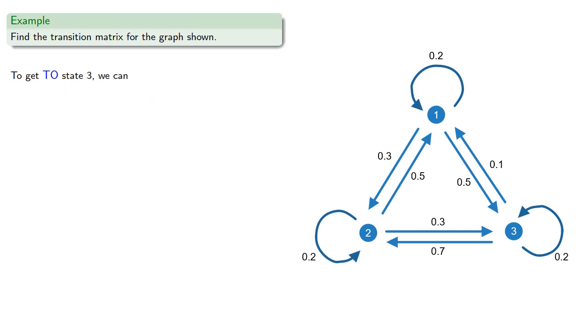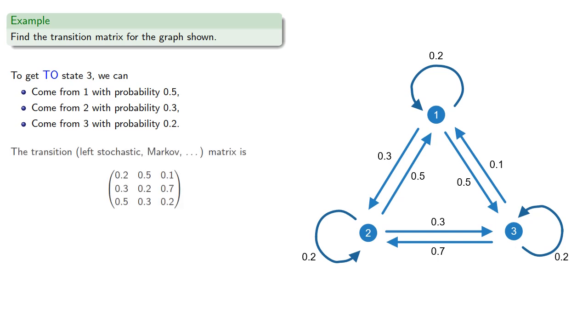And finally, to get to state 3, we could have come from 1, 2, or 3 with probabilities. And so this gives us our Markov matrix.